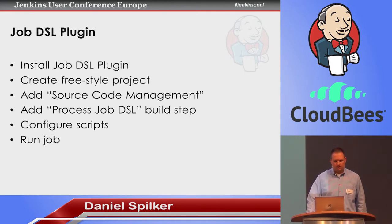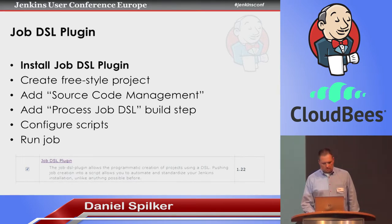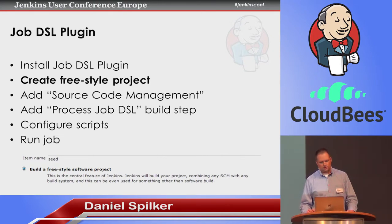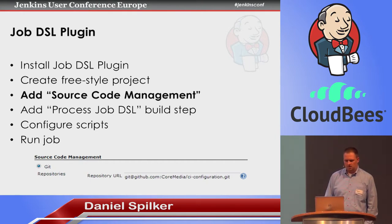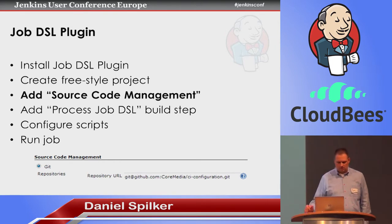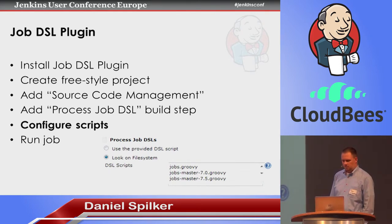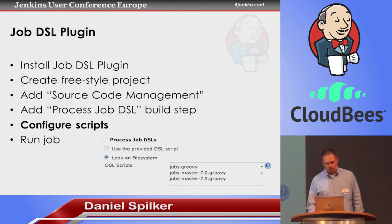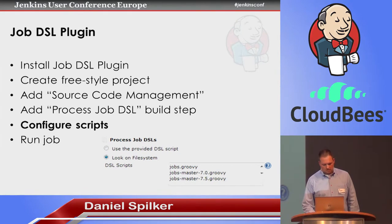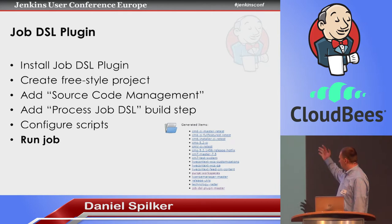So how does the Job DSL plugin work? First you have to install it from the update center. Then you have to create one job — the seed job. We call it the seed job because it spawns all other jobs; that's the only job you should create manually. For that job you enter a source code management location where your job configuration lives. Then you add a build step — the plugin provides a 'Process Job DSL' build step that will execute the job script. You can either enter a Job DSL script directly, which is more for testing, but we really want to use files from source code management, so you enter the names of your job files. Then you run the seed job and it generates all other jobs.